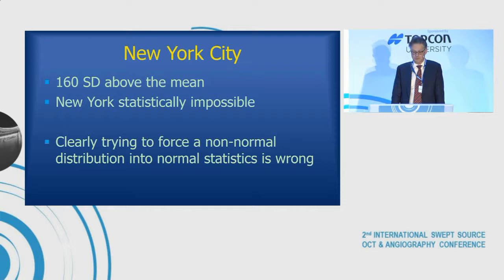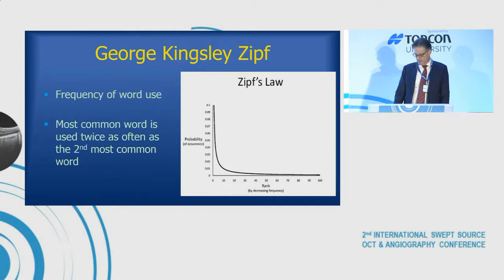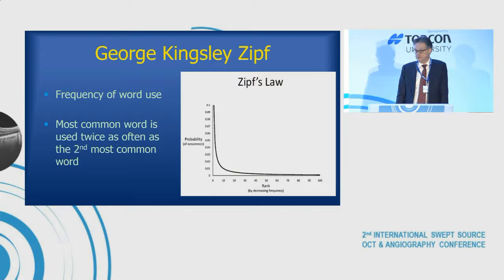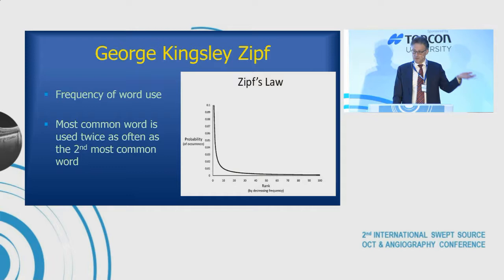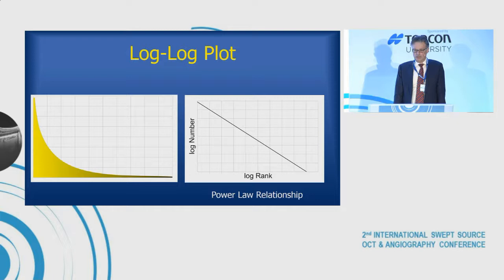There was a guy who really started interest in this — George Kingsley Zipf, who was at Harvard in the 1920s. He looked at how often words were used in the English language and found they followed a curve. The most common word is used twice as often as the second most common, three times more often than the third, and ten times more often than the hundredth. If you plot that out on a log-log plot, it comes out to be a perfectly straight line.